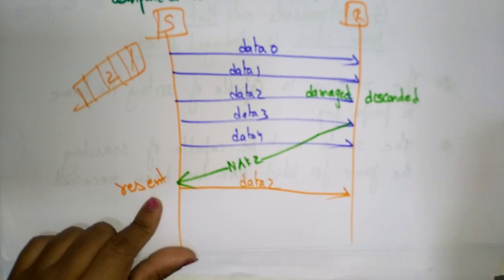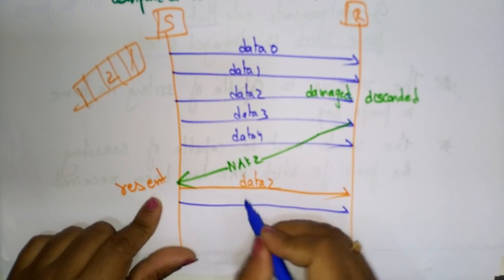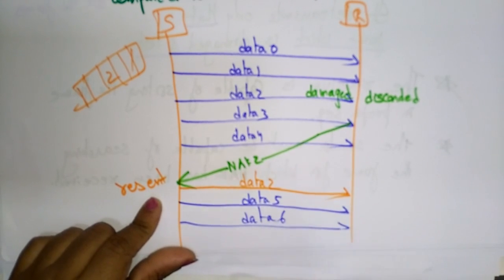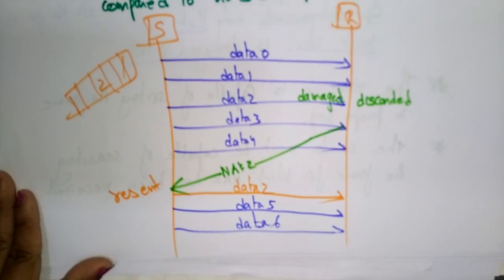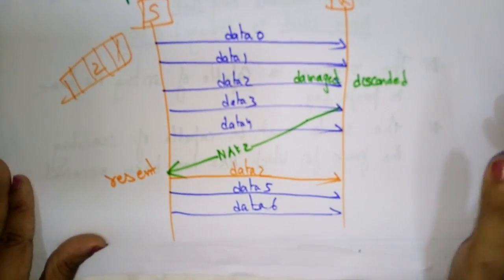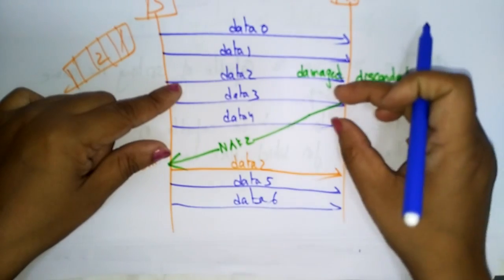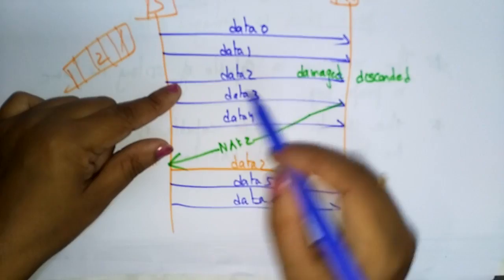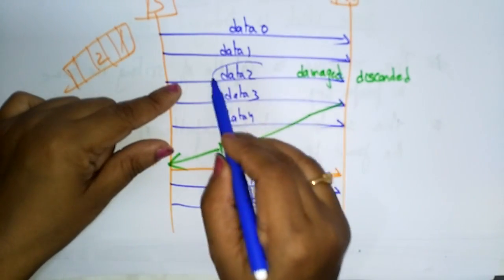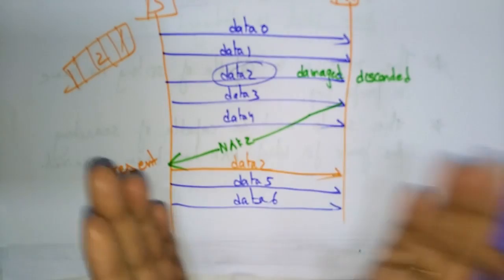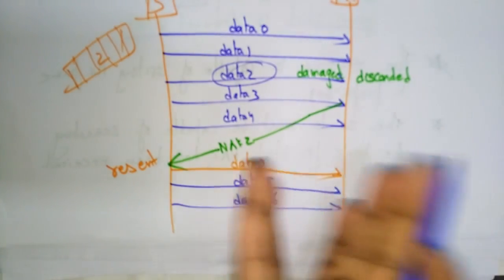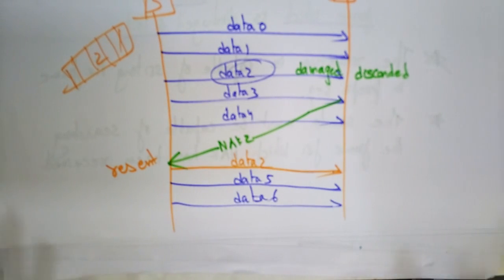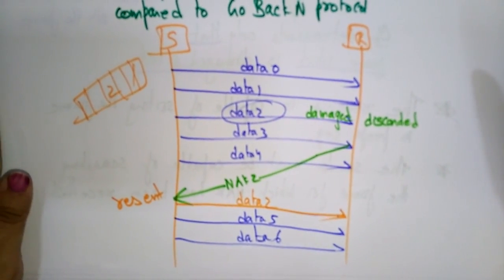Then I proceed with the next data — data 4, data 5, data 6, and so on. This is the key difference between Go-Back-N and Selective Repeat: in Go-Back-N, when data 2 is damaged, all remaining frames — data 3, data 4 — are also discarded. But in Selective Repeat, only the selected frame is repeated; the name itself indicates this — only the selective data is resent and the rest continues as usual. This is the Selective Repeat protocol. Thank you.